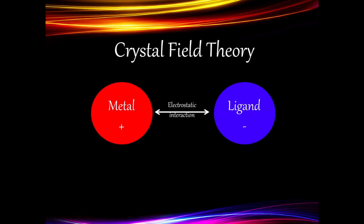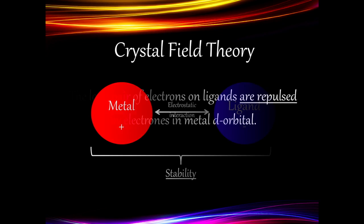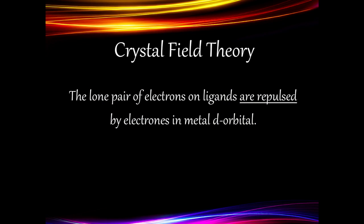A metal complex is made up of a metal ion, which has a positive charge, and a ligand, which has a negative charge. Due to these opposing forces, there is an electrostatic force of attraction between the metal ion and the ligand, and this provides stability. The ligand will donate its lone pair of electrons and form a dative bond with the metal ion.